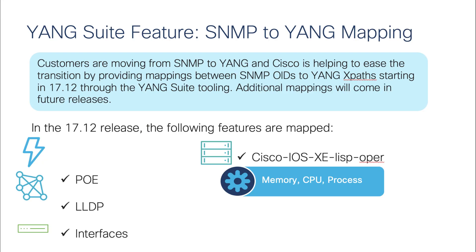Additionally, there is an industry trend of moving from SNMP to YANG. Cisco is helping to ease this transition by providing mapping between SNMP OIDs and YANG models starting in 17.12. Some of the features supported in this mapping include PoE, LLDP interfaces, memory, and CPU process. Additional feature mappings will be available in future releases.